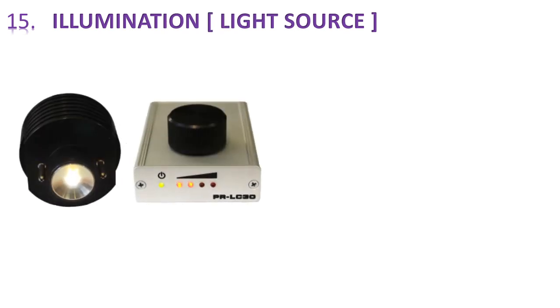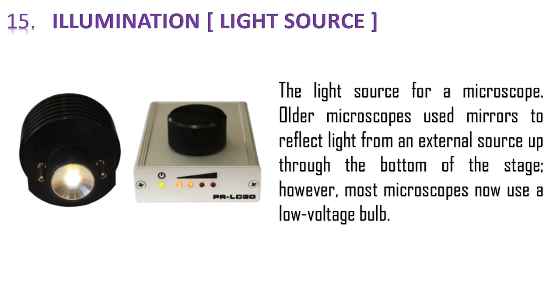Number 15 is illumination or light source, which is generally an artificial light source. The light source for a microscope. In older microscopes, they use mirrors to reflect light from a standard source up through the bottom of the stage. Now they use low voltage bulbs and a control system for changing the intensity or power of the bulb.